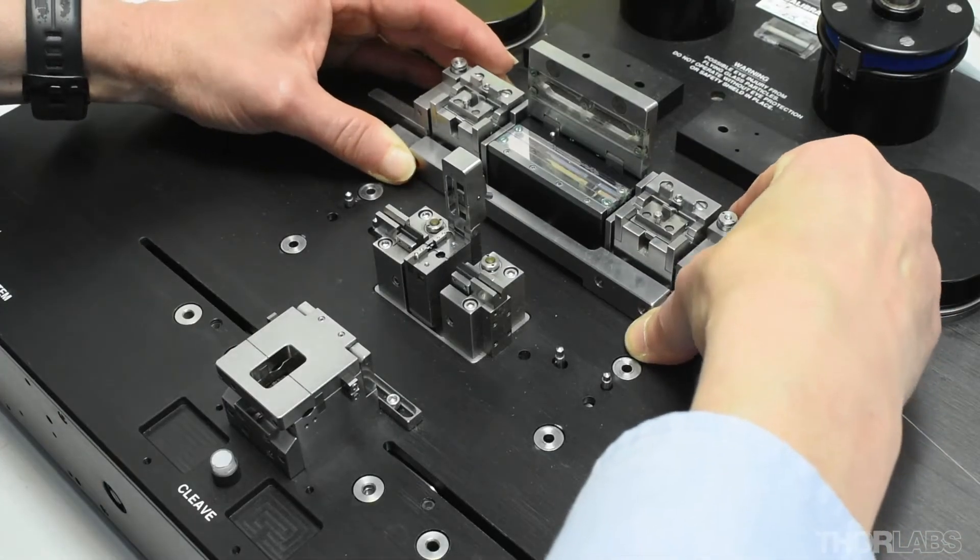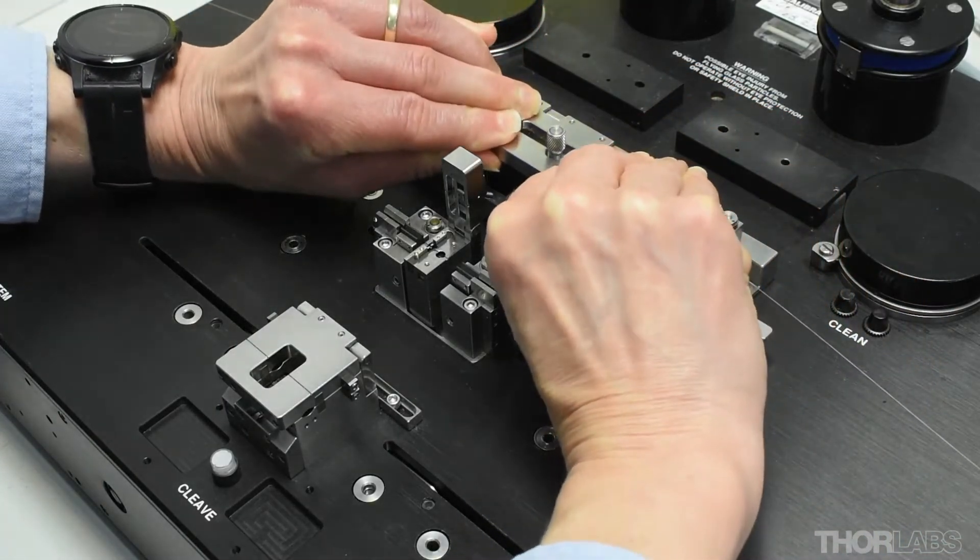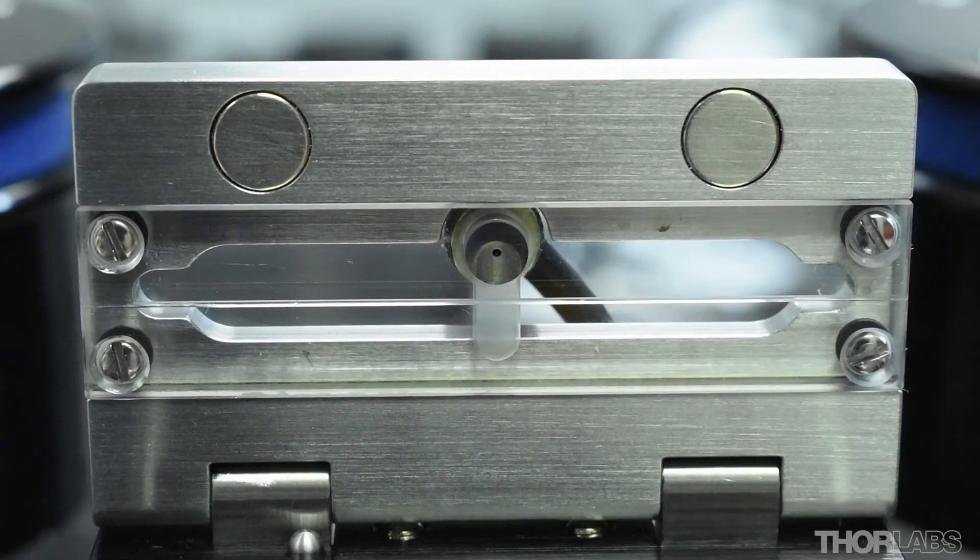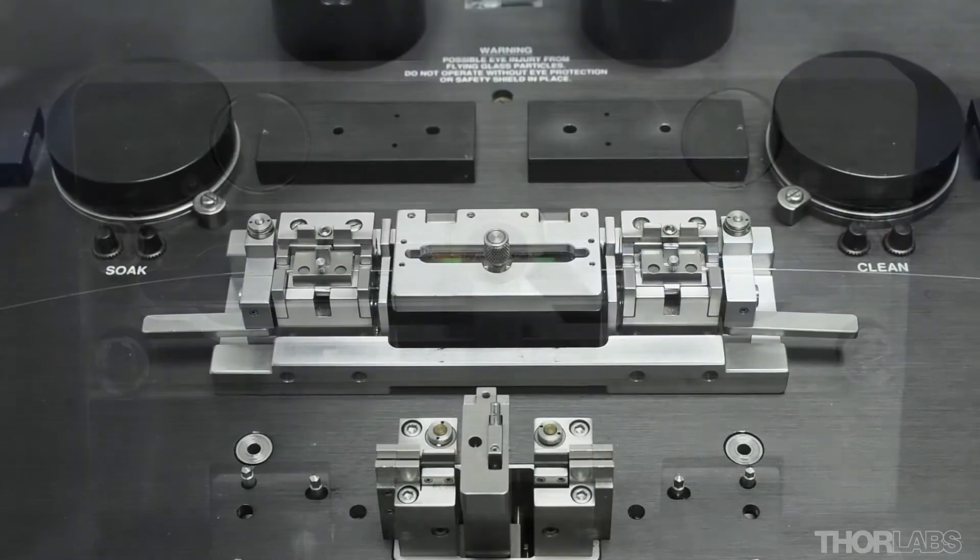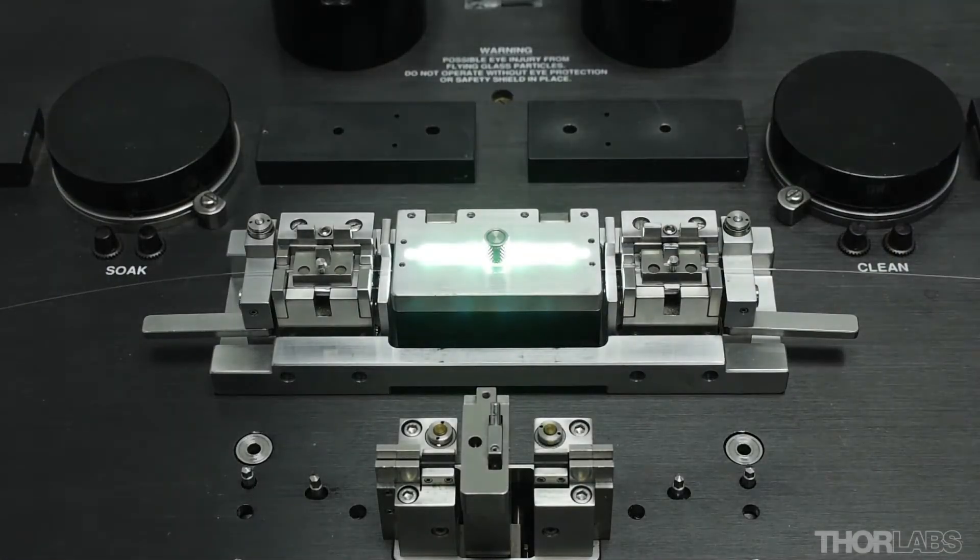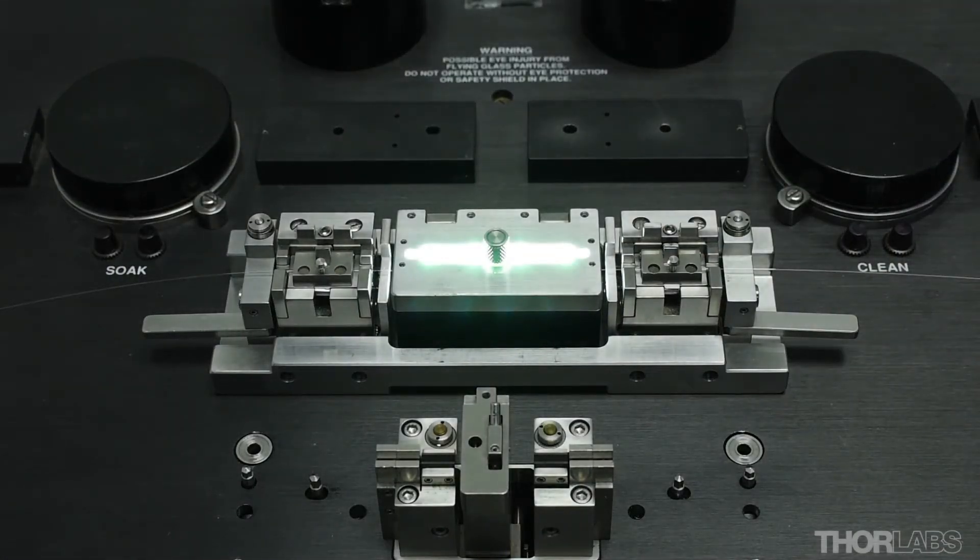Recoating is carried out by loading the splice into the recoat mold. A UV acrylate recoat material is then injected into the mold. UV lamps then cure this material and form the recoat around the fiber.